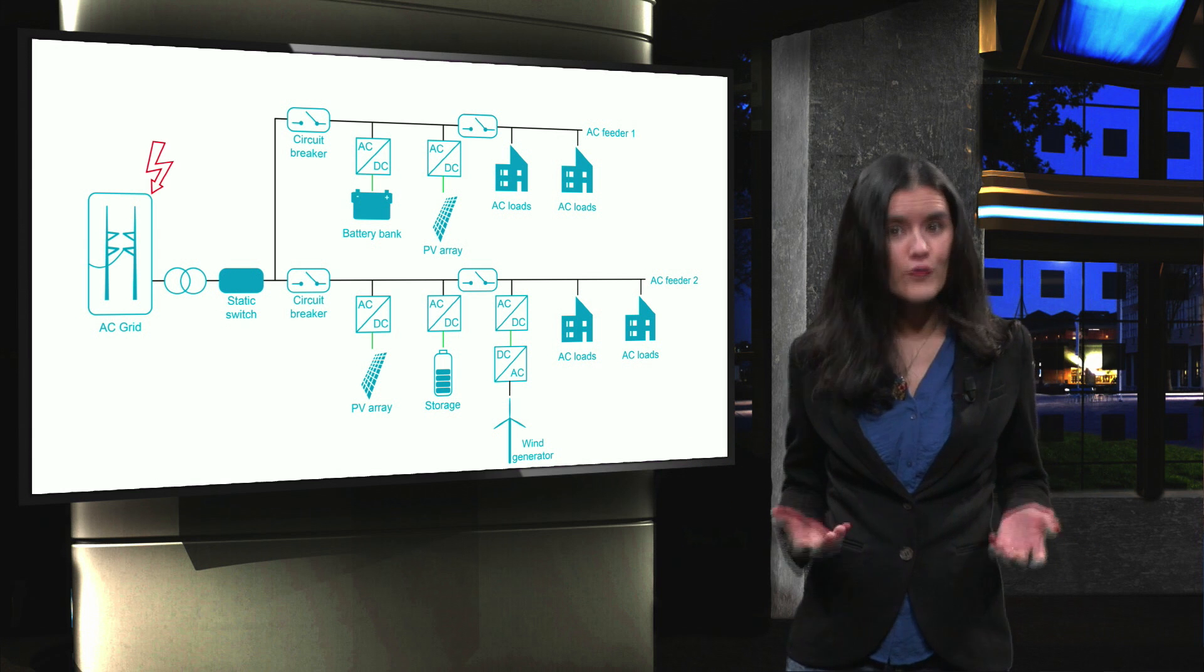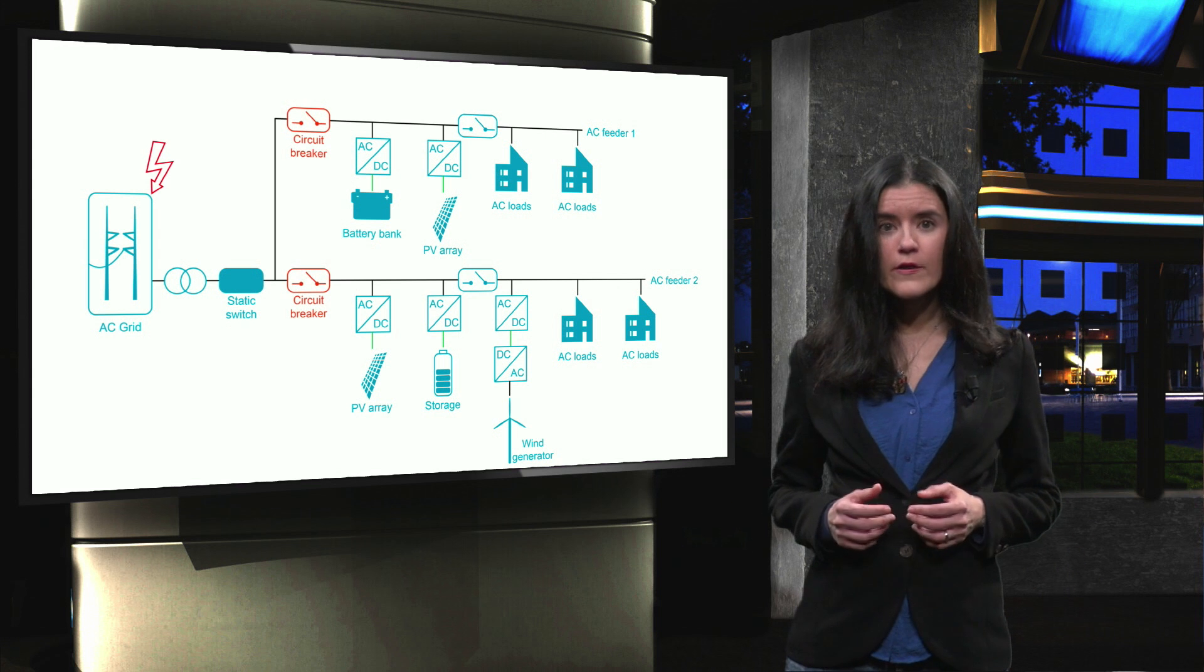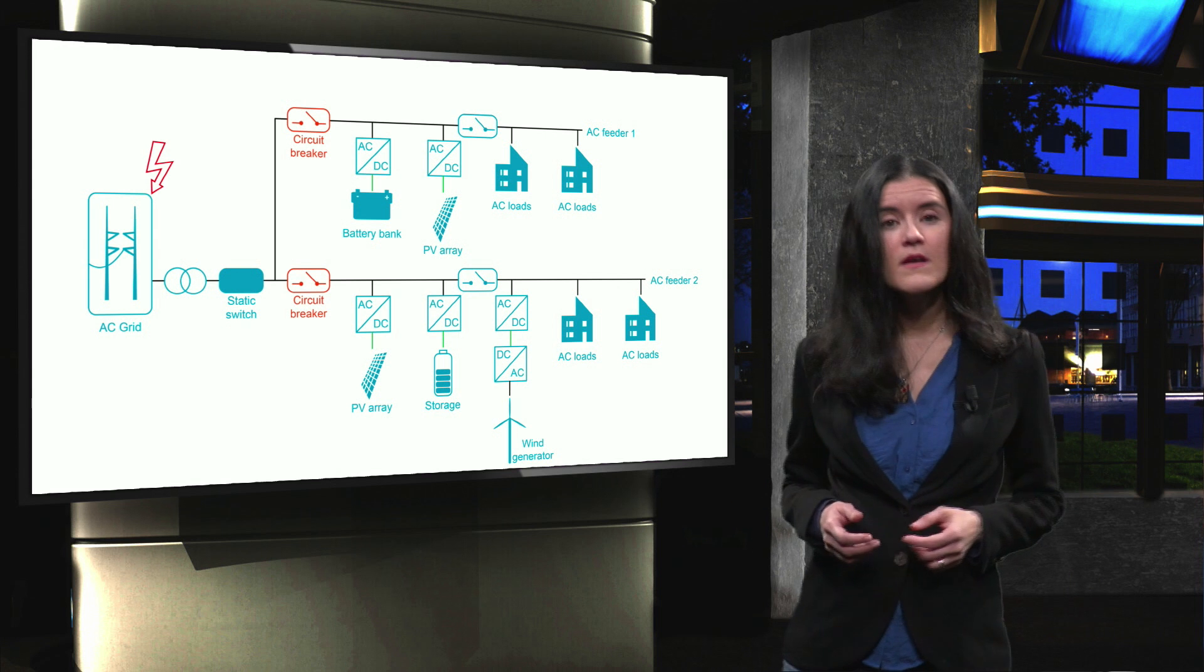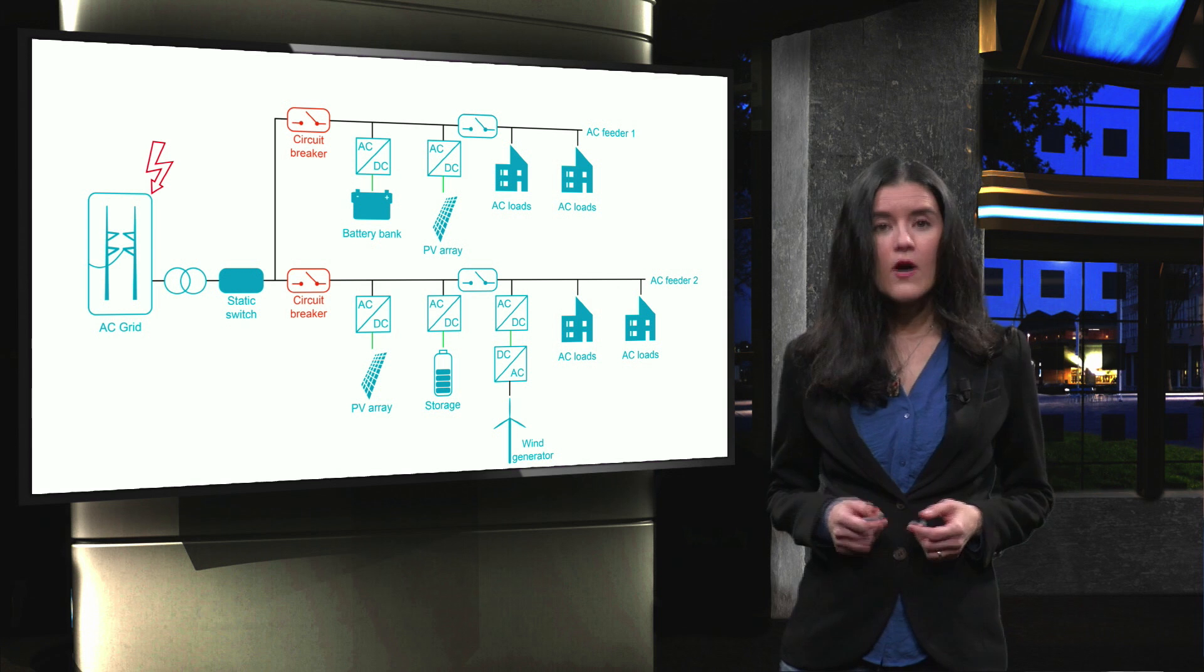If a fault occurs at a utility grid, the microgrid should be quickly isolated from the external grid in order to protect the microgrid components like the PV systems and others. This is performed with the operation of protection devices.